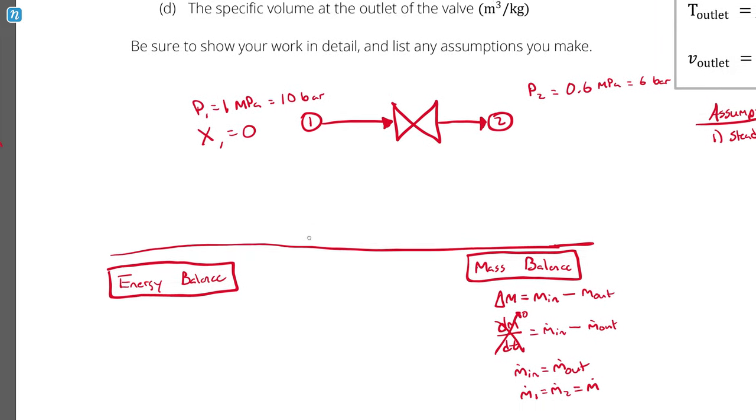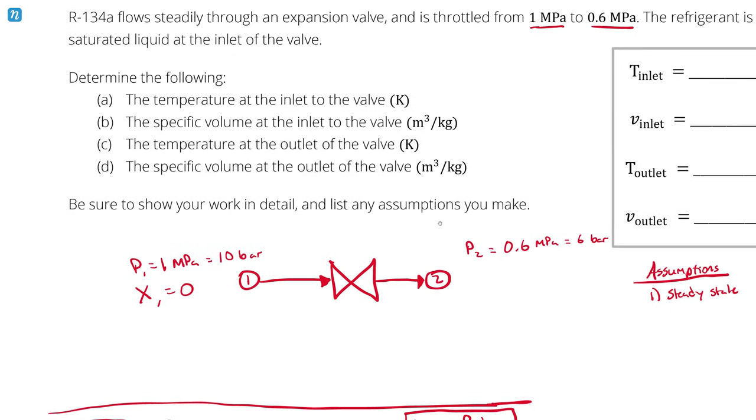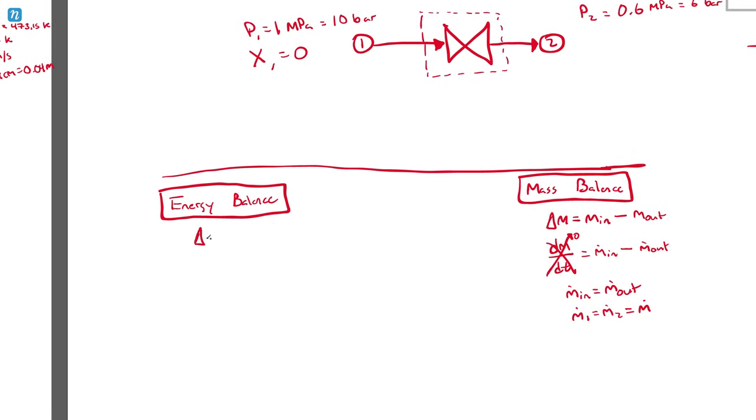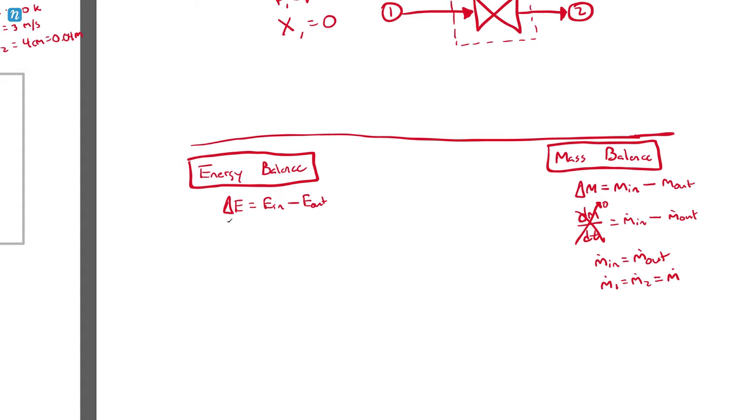Now, on to the energy balance. First question, is this an open or closed system? I already know it's steady. If I identify my system as the valve itself, or the mass inside the valve, then I have mass crossing the boundary. Therefore, this is an open system. My change in energy is the energy in minus the energy out. Again, I'm going to use the rate of change form, dividing all terms by dt. dE/dt equals the rate of energy in minus the rate of energy out. And because no property can change with time if it's steady, this is zero. Therefore, energy in equals energy out.